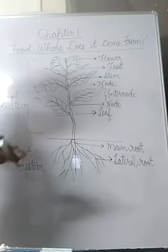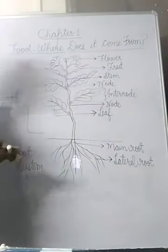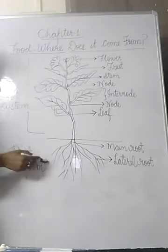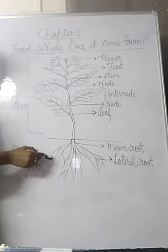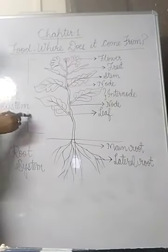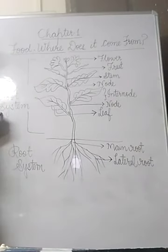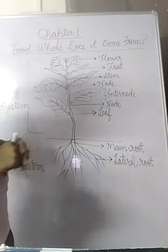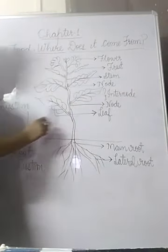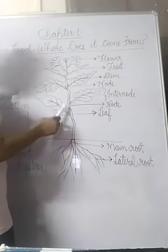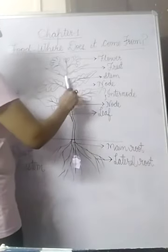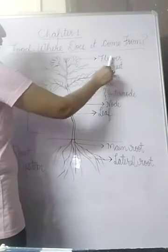Now we will talk about the different parts of a plant. There are two main parts of a plant. One is below the ground which is called the root system, and one is above the ground which is called the shoot system. The different parts of the shoot system are leaf, stem, fruit, and flower.